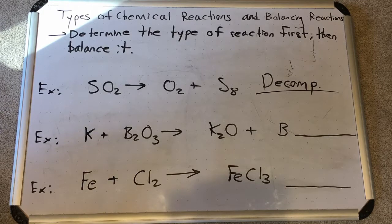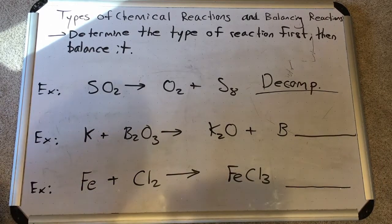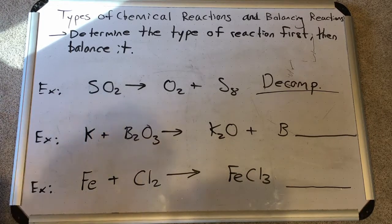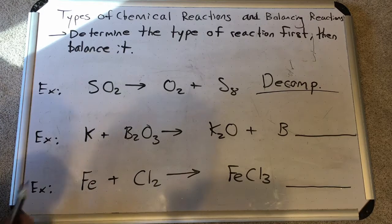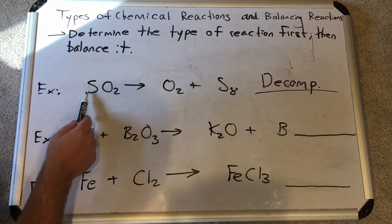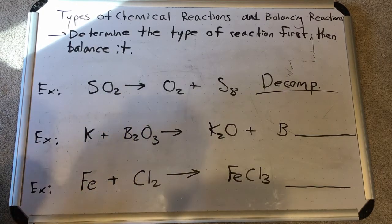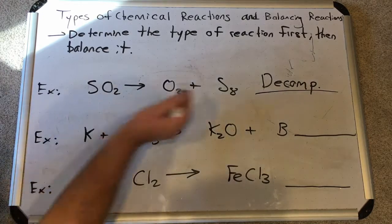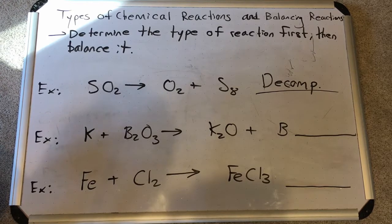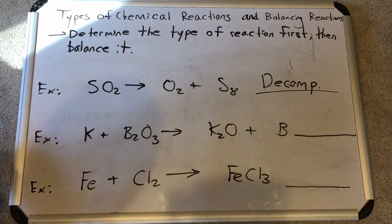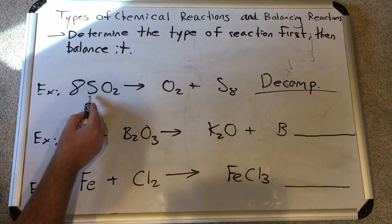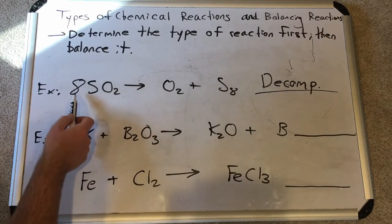Now we have to balance it. We need the same number of each element on each side. My method: start with the leftmost reactant. There's one sulfur and two oxygens in SO2. On the product side there are eight sulfurs in S8, so sulfur is not balanced. We cannot subtract — we can only increase the side that has less. So we multiply SO2 by eight, giving eight sulfurs on both sides.